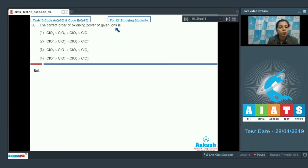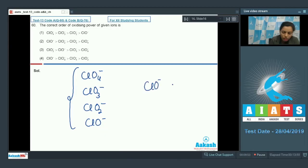Now, after this, question number 60. The correct order of oxidizing power of the given ions is? Oxidizing power means ability to reduce itself and to oxidize other substance. We have the different ions: ClO₄⁻, then ClO₃⁻, ClO₂⁻ and ClO⁻. Among all these ions, if we consider ClO⁻, this is the least stable species. And as it is least stable species, it has more nature to be converted into the stable species by oxidizing other substance. So, its oxidizing power is maximum.